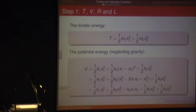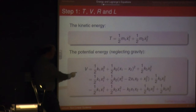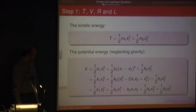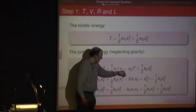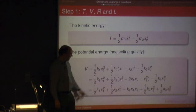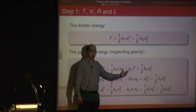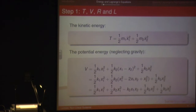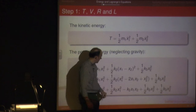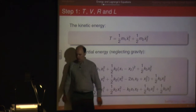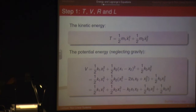For the potential energy, neglecting gravity — so there are no MGH terms — this is all just the spring forces. We've got one-half K1 X1 squared, which is the motion of X1. We've got one-half K2, and that's the relative motion between X1 and X2. Because this is squared, it doesn't matter the order you put it in — you get exactly the same result. So it's the relative motion X1 minus X2 squared, times K2. And then there was a spring connecting mass 2 to ground, so that's one-half K3 X2 squared. On the next line I've just multiplied out that middle term.